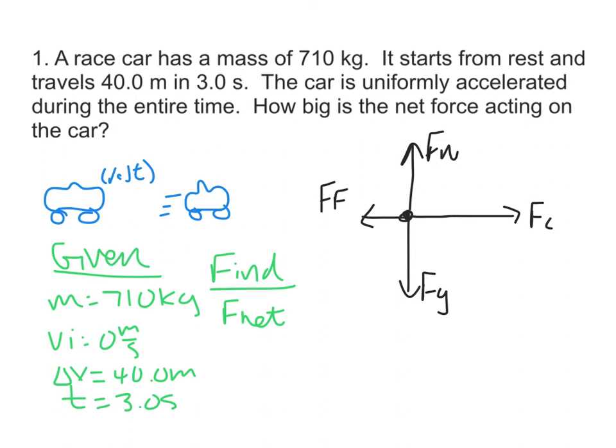So we know that the net force will equal the mass times the acceleration. We have mass and we do not have acceleration. However, given v initial, delta x, and t, we have what we need to find acceleration using kinematics. The equation it makes most sense to use is delta x equals one half a t squared plus v initial t. Starts from rest, so that term goes to 0.